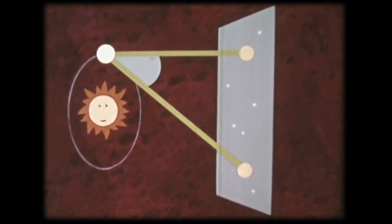The bigger this angle, the nearer the star. From the size of the angle, astronomers can determine distances to nearby stars.